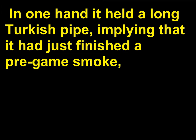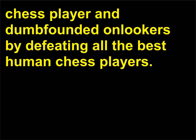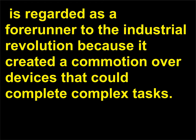In one hand it held a long Turkish pipe, implying that it had just finished a pre-game smoke. Its innards were filled with gears, pulleys, and cams. The machine seemed a keen chess player and dumbfounded onlookers by defeating all the best human chess players. It was a farce, however — its moves were surreptitiously made by a man hiding inside. The Turk, so dubbed because of the outfit similar to traditional Turkish garb, is regarded as a forerunner to the Industrial Revolution because it created a commotion over devices that could complete complex tasks.